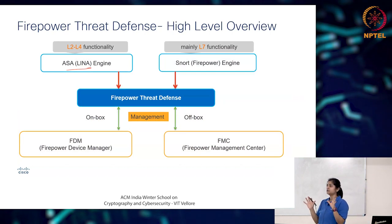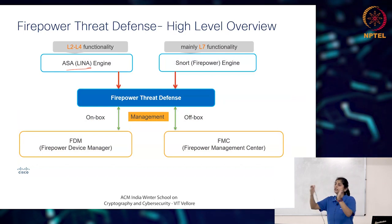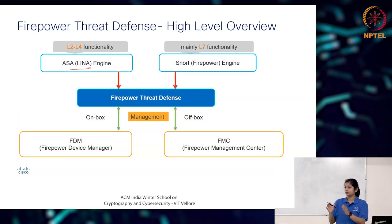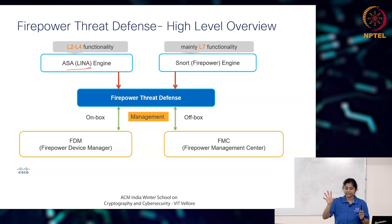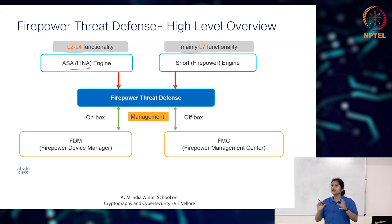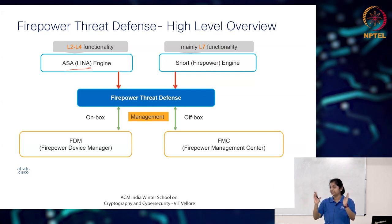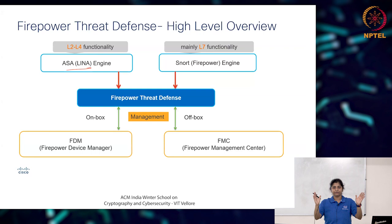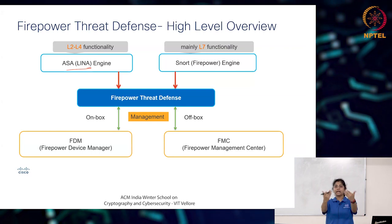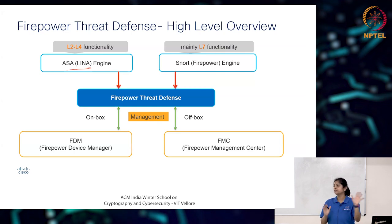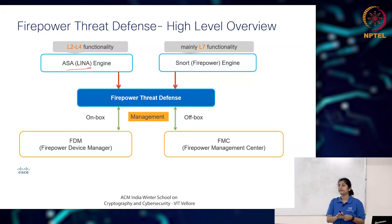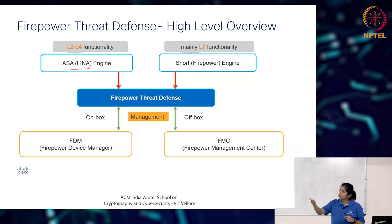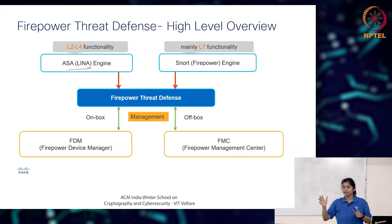In our terminology, anything that FTD does in accordance with ASA is handled by the LENA engine. Anything from the Firepower perspective is handled by the SNORT engine. ASA and SNORT have different background machinery — they don't work on the same CPU and their architecture is different. But when combined, for the administrator viewing an FTD, both things appear in the same place — that is the beauty of FTD, where you wouldn't know what is in LENA and what is in SNORT.